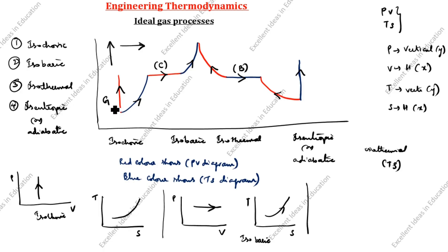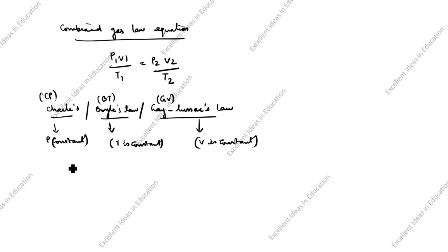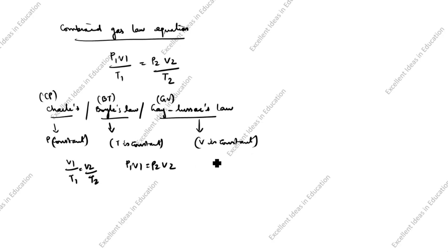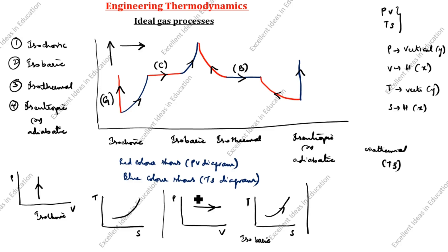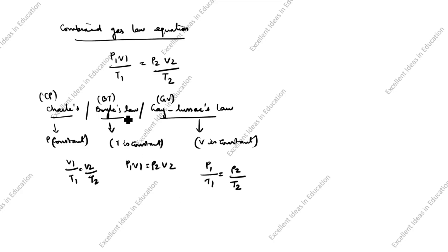For Gay-Lussac's law, V1 by T1 equals V2 by T2. From the combined gas law P1V1/T1 = P2V2/T2: since P is constant for Charles' law, cancel P; since T is constant for Boyle's law, cancel T; since V is constant for Gay-Lussac's law, cancel V. So what remains is P1 divided by T1 equals P2 divided by T2. This is the simple trick formula for Charles', Boyle's, and Gay-Lussac's laws.